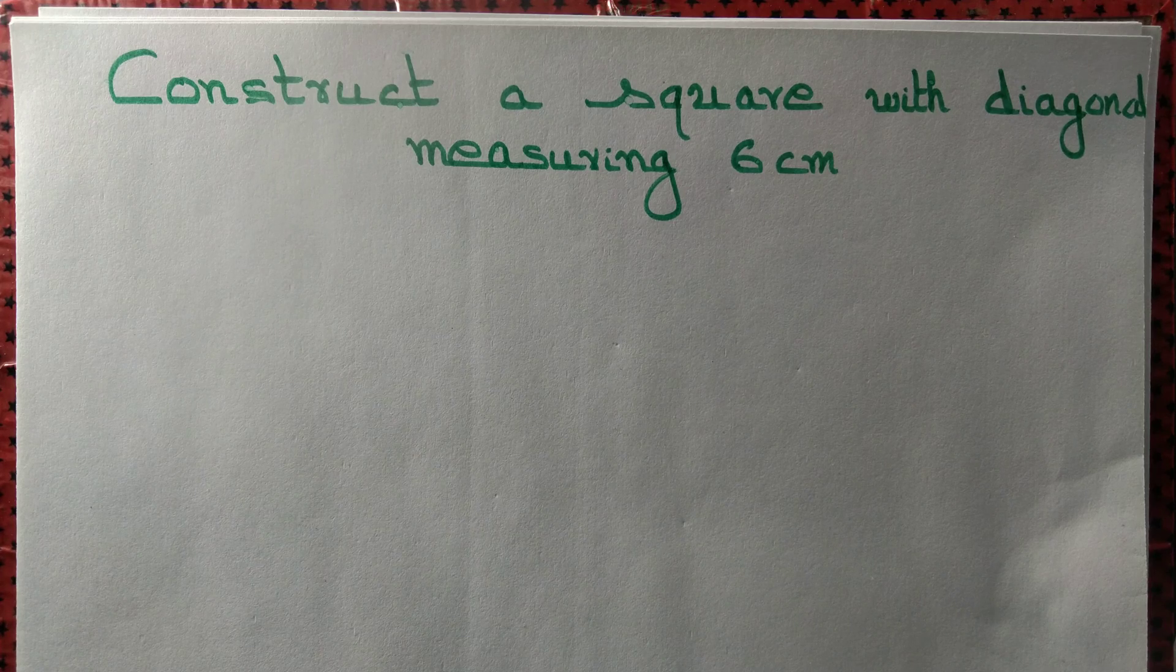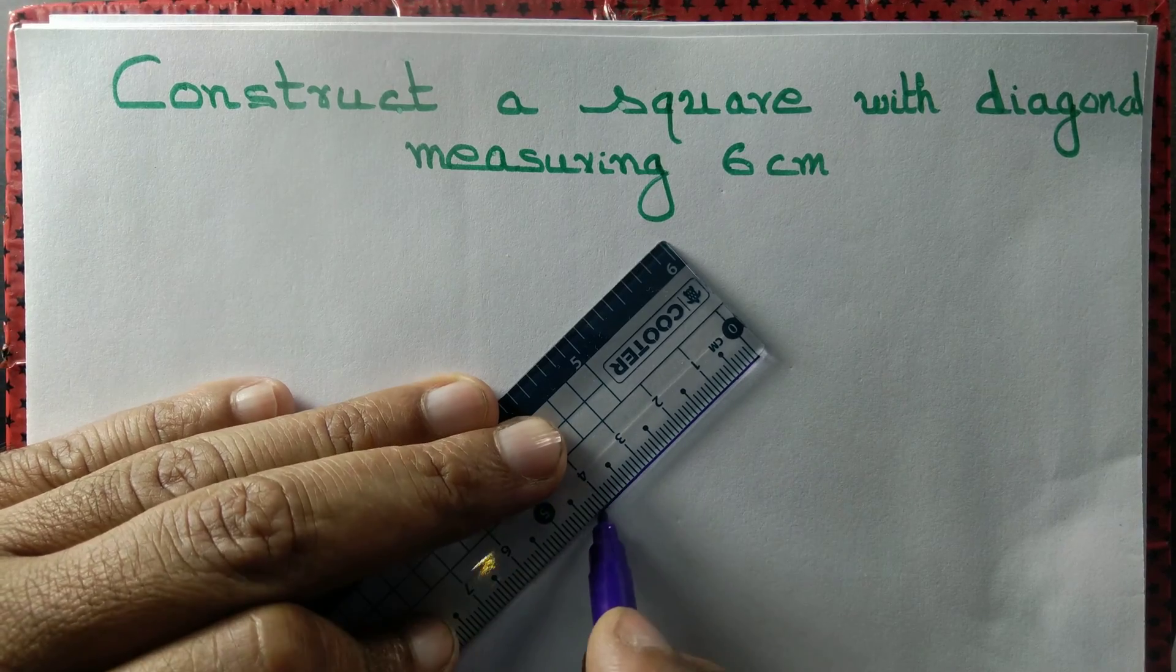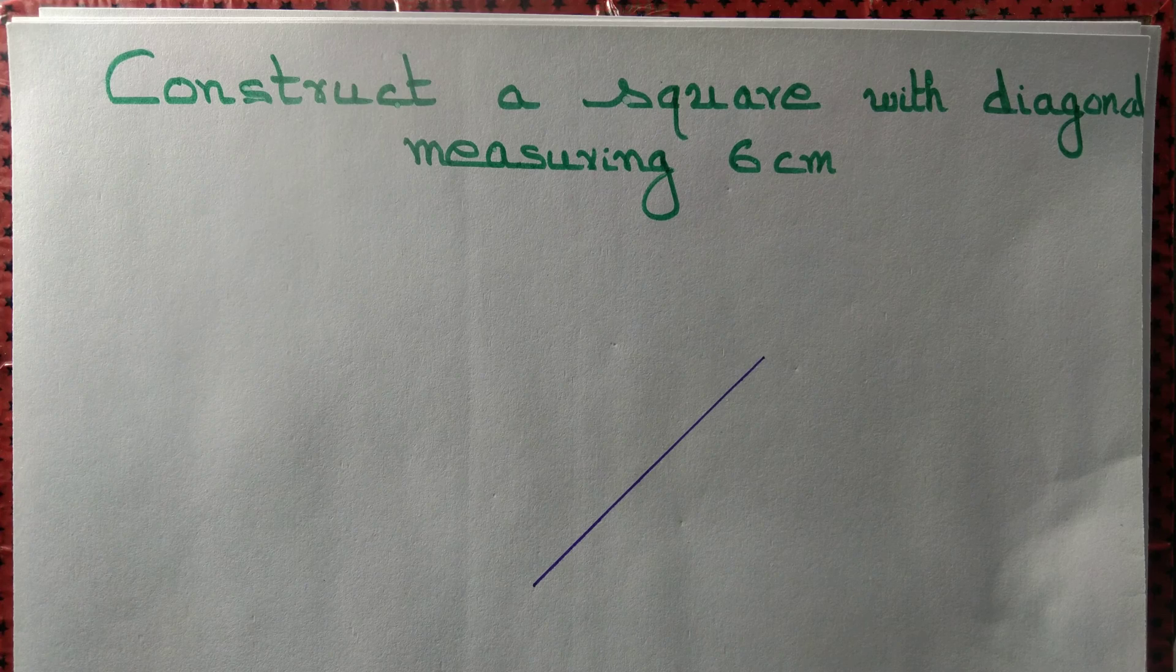Let us construct a square with diagonal measuring 6 cm. 0 to 6. So we draw a diagonal that measures 6 cm.